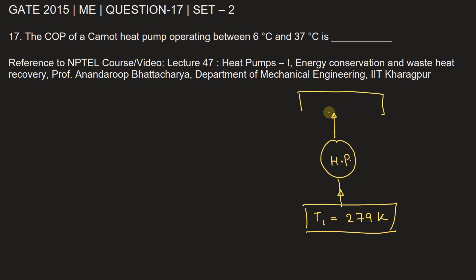This is 37 degrees Celsius. So T2 is 37 degrees Celsius, or 37 plus 273, that will be equal to 310 Kelvin. And in this process work is done on the pump.